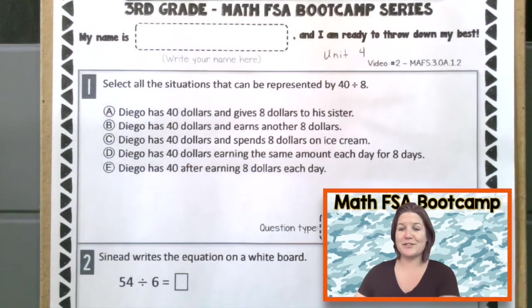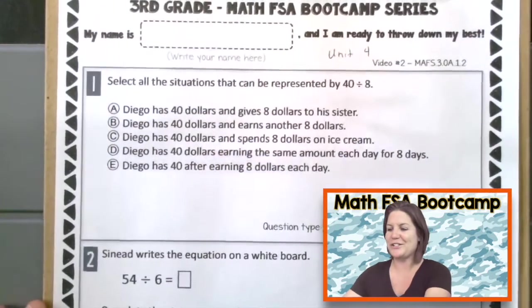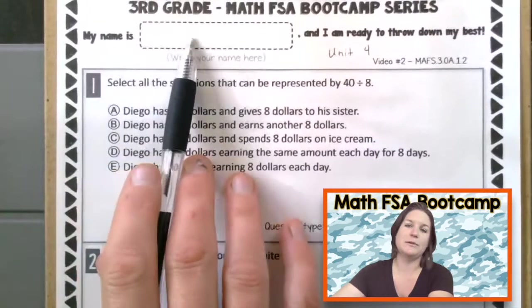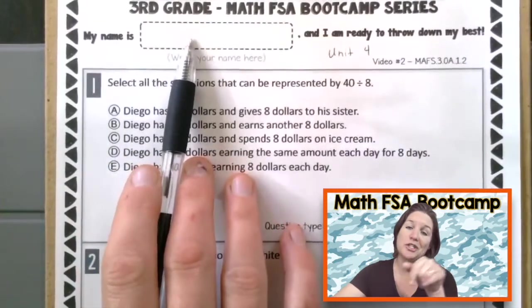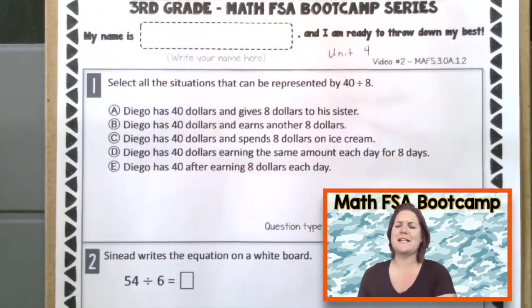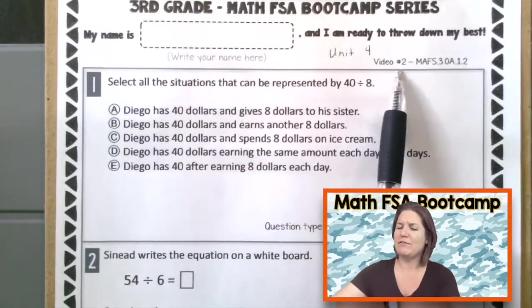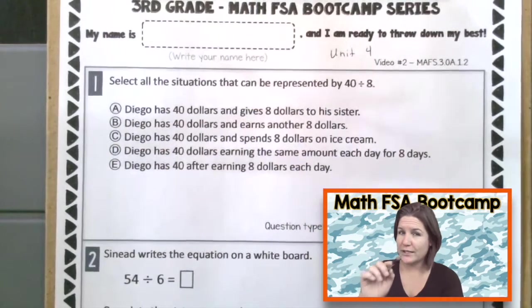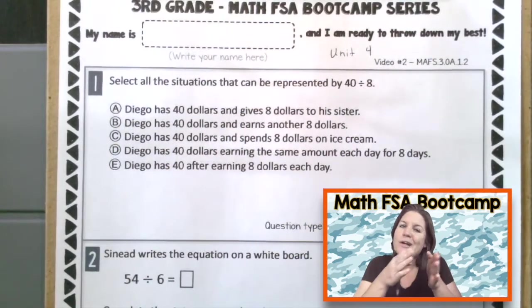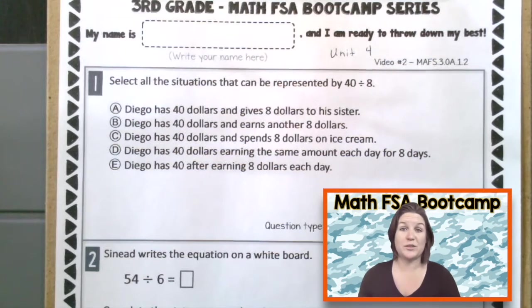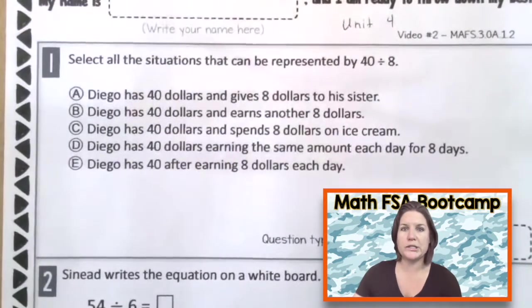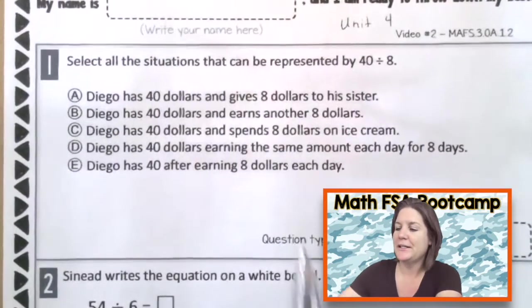All right. Welcome back. So I'm really excited today. I hope that you went ahead and wrote your name here. It says, my name is blank. Don't write blank, write your name. And I am ready to throw down my best. That's right. And we have video two and I wrote down unit four right there. There's a reason why I wrote it down, because I'm going to kind of point you in the right direction if you need some more practice with this skill. So let's take a look at number one. There's a lot of words in number one. Oh my goodness. Let's do it.